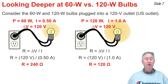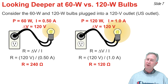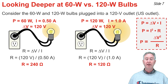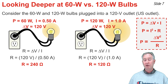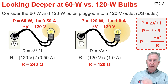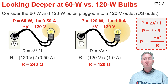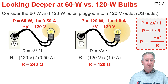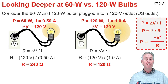So the less powerful bulb, the 60-watt bulb, has twice as much resistance as the 120-watt bulb. Now I know delta V, I, and R for both bulbs. I've already used P equal delta V times I to calculate currents. I want to use the other two equations — substituting in values of I, R, and delta V — to see what values I get for power. Let's see if the equations work.